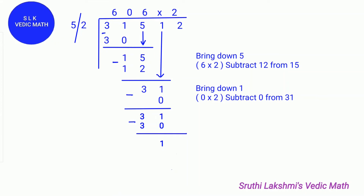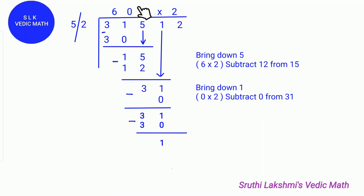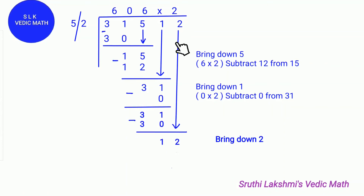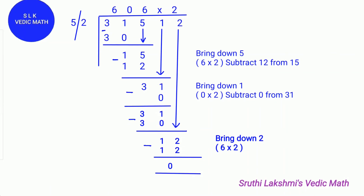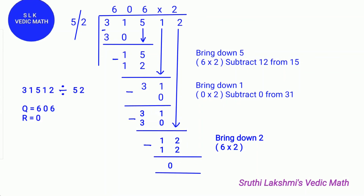Next we do 0 times 2, which is 0, so we do 31 minus 0, which equals 31. Next we find how many 5s can fit in 31. Six 5s can fit, so we write 6 on the quotient line and do 5 times 6, which is 30. We do 31 minus 30, which gives us 1. Next we bring down 2, then do 6 times 2, which is 12. So 12 minus 12 gives us 0. The quotient is 606 and the remainder is 0.